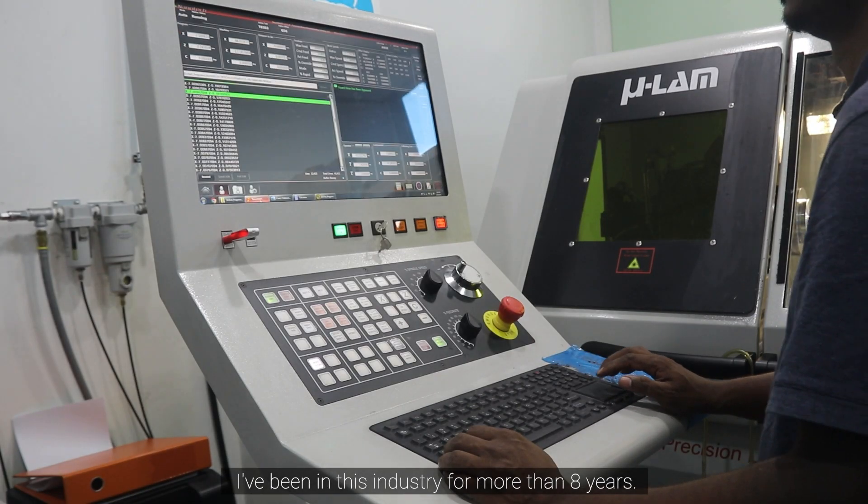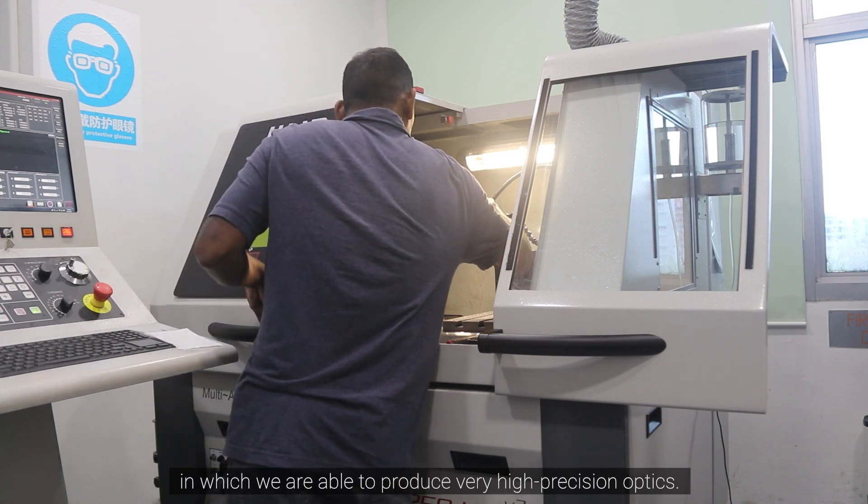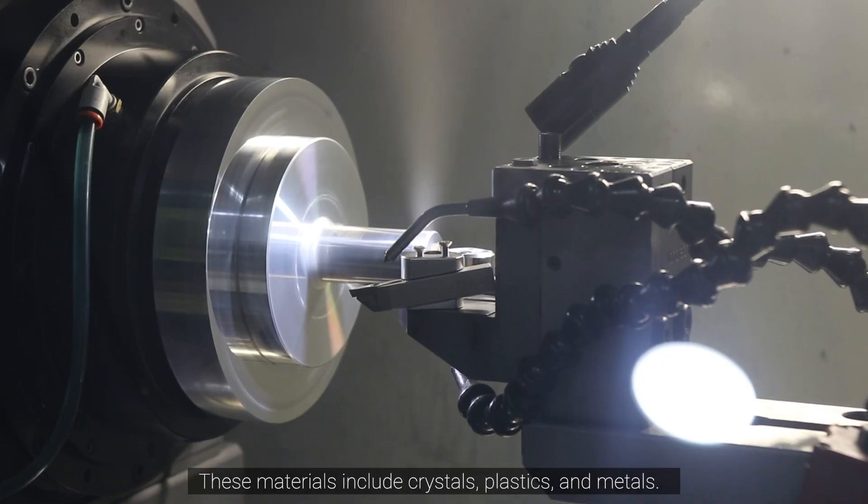I've been in this industry for more than 8 years. Diamond turning is the ultra-precision machining process in which we can produce very high precision optics, materials which include crystals, plastics, and metals.